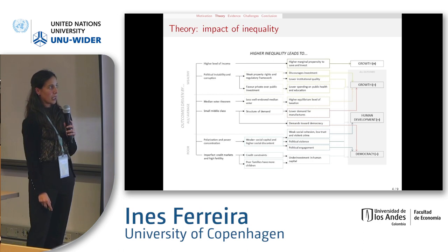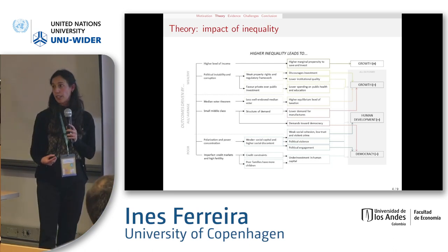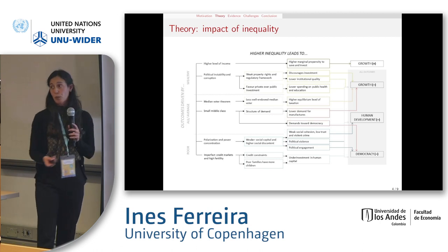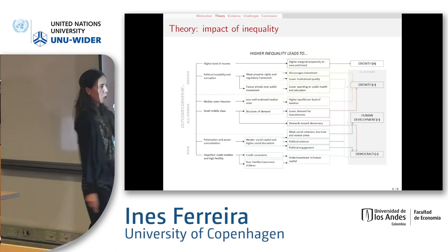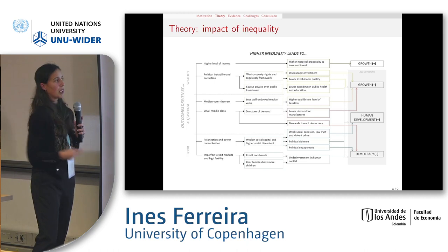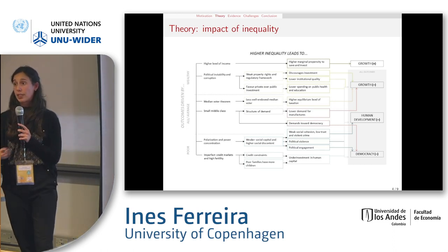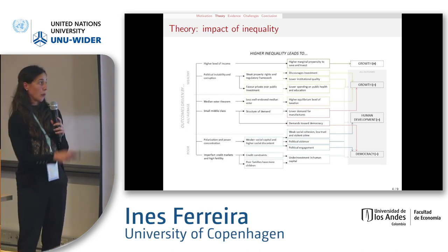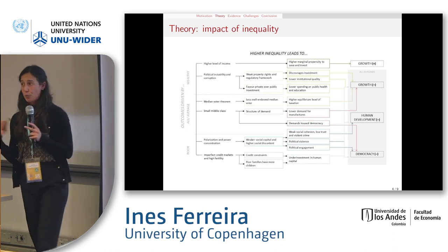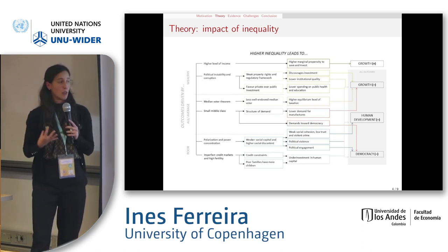Later theoretical insights drew attention to negative effects on different outcomes. For example, it has been said that inequality discourages growth through discouragement of investment via weak property rights and the regulatory framework. Here we're talking about the effect of inequality on policymaking and on political instability, which has a negative effect not only on growth but also on democracy and governance through lower institutional quality. If inequality leads to favoring private over public investment, this leads to lower spending on public health and education. Some political economy theorists focused on the median voter theorem, which predicts that a lower-endowed median voter will tend to prefer a higher equilibrium level of taxation, with a negative effect on growth.